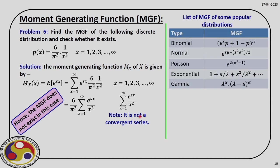These are some standard random variables and their moment generating functions. We have derived the MGF for the standard normal distribution, but as a home task, try deriving it for a general normal distribution with mean μ and standard deviation σ. As a special case, verify that putting μ=0 and σ=1 gives the MGF as e^(s²/2). Now before closing the discussion on moment generating function, let us study the properties of the MGF.